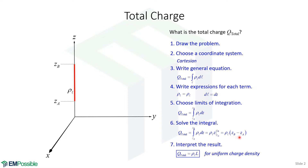Z_B minus Z_A is the total length of the line charge. So we can write a rather general equation: when we have uniform charge density, the total charge equals the charge density times the length of the line. This is independent of however the line might meander — if we just know the overall length and it has uniform charge density, we can use that equation. If the charge density is not uniform, then we must do the integration.